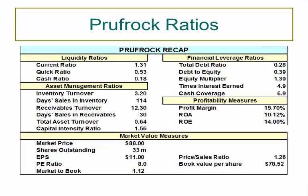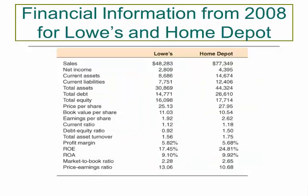This is a Prufrock ratios recap—here are all of the ratios with the numbers we've calculated during this lecture. Moving beyond the basic ratios, let's compare two companies: Lowe's and Home Depot. They do pretty much the same thing. Pay special attention to the ROE number—17.45% return on equity for Lowe's and 24.81% return on equity for Home Depot. If you're an investor, that difference would really make you want to question what Home Depot is doing to get a higher return on equity.